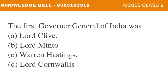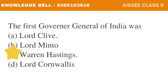Question number 4: The first Governor General of India was — A. Lord Clive, B. Lord Minto, C. Warren Hastings, D. Lord Cornwallis. The correct answer for this question is Option C: Warren Hastings. Warren Hastings was the first Governor General of India.